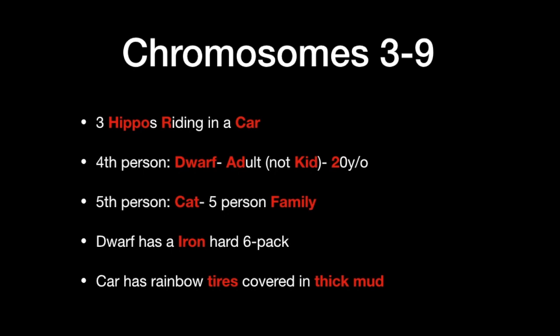The car has rainbow tires. In rainbows there are seven colors, so rainbows represent the number seven. These tires are made of rubber — an elastic substance — and they're covered in thick mud. Lastly, this car also has nine exhaust tubes. A normal car has one or two, but this car has nine because it can go super fast. The fastest I typically drive on the highway would be up to 90 miles per hour, so this car can go 91 miles per hour.